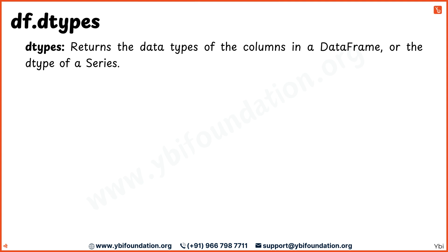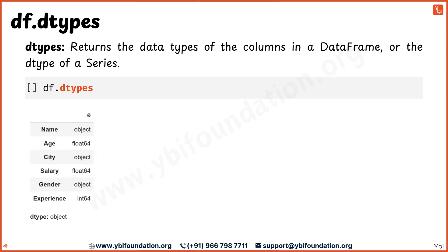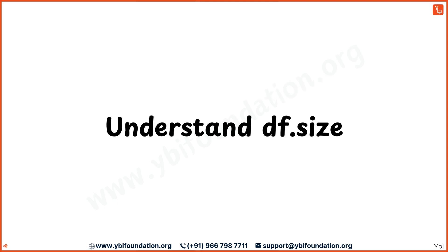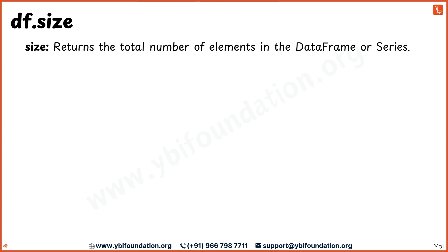The df.dtypes attribute returns the data type of each column in the DataFrame. The output tells us that name, city, and gender columns are of type object, while age, salary, and experience are numeric. df.shape attribute returns the dimensions of the DataFrame as a tuple indicating number of rows and columns — the output tells us the DataFrame has 6 rows and 6 columns. The df.size attribute returns the total number of elements in the DataFrame, calculated as rows multiplied by columns. The DataFrame contains 6 rows and 6 columns, therefore total elements are 36.